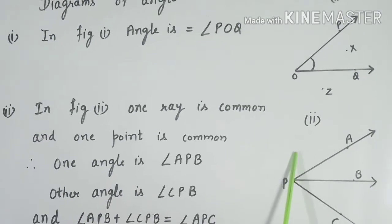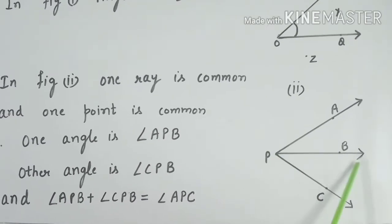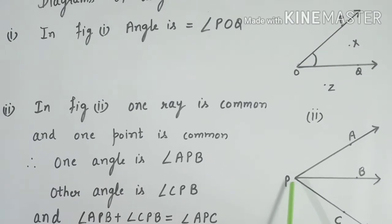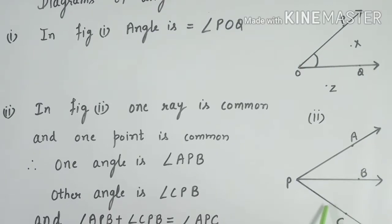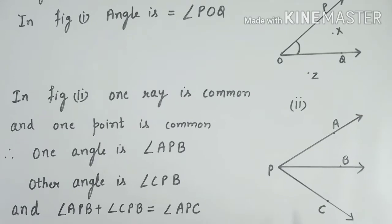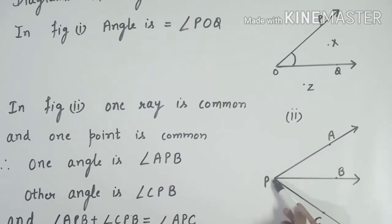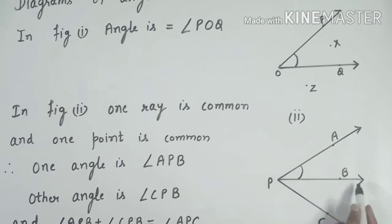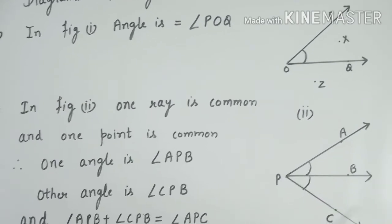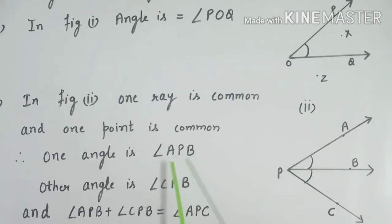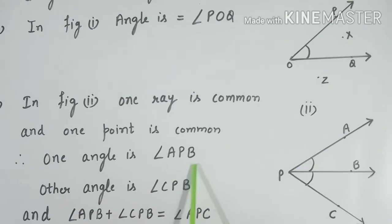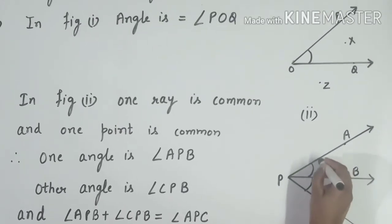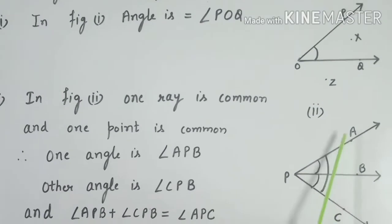We have discussed the second figure in which one point and one ray is common. One point P is the common vertex, and one ray PB is common. So the first angle is denoted as angle APB and the second angle is angle CPB. By combining angle APB and angle CPB, we get angle APC.